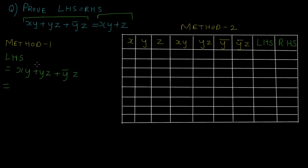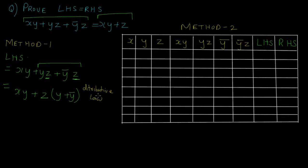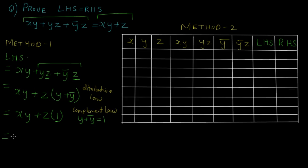The LHS is as follows. Notice that in these two terms we have Z common, so I can take it out. By the distributive law, it simplifies to X·Y OR Z·(Y OR Y complement). If you don't know the boolean algebraic laws, you can check them out in our playlist. The next step gives us X·Y OR Z·(1), because Y OR Y complement equals 1 — this is the complement law. So the next and last step is X·Y OR Z, since anything AND 1 equals that thing, which is the identity law.